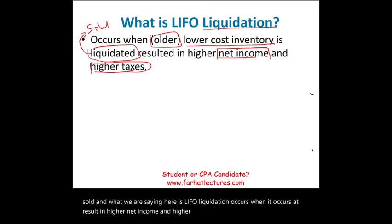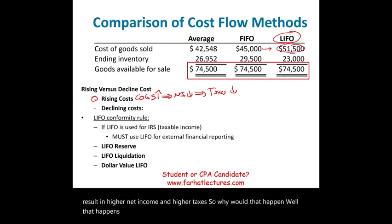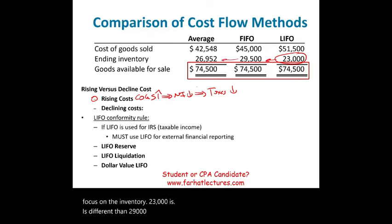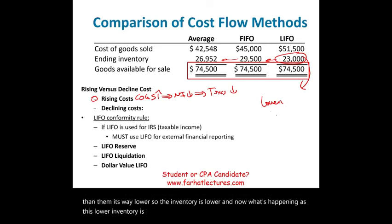Why would that happen? It happens because the old inventory under LIFO — $23,000 — is different from $29,500 or $26,952. The LIFO inventory is way lower than the others. As this lower-cost inventory is being liquidated, the cost of goods sold becomes lower.